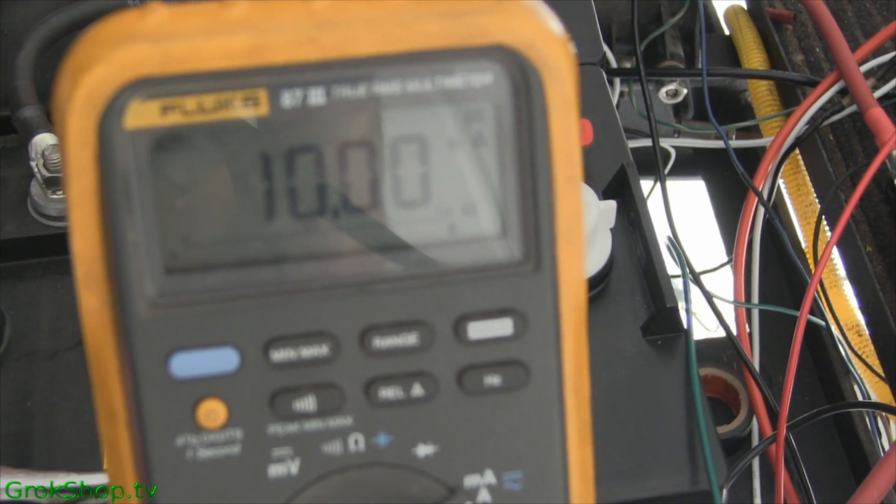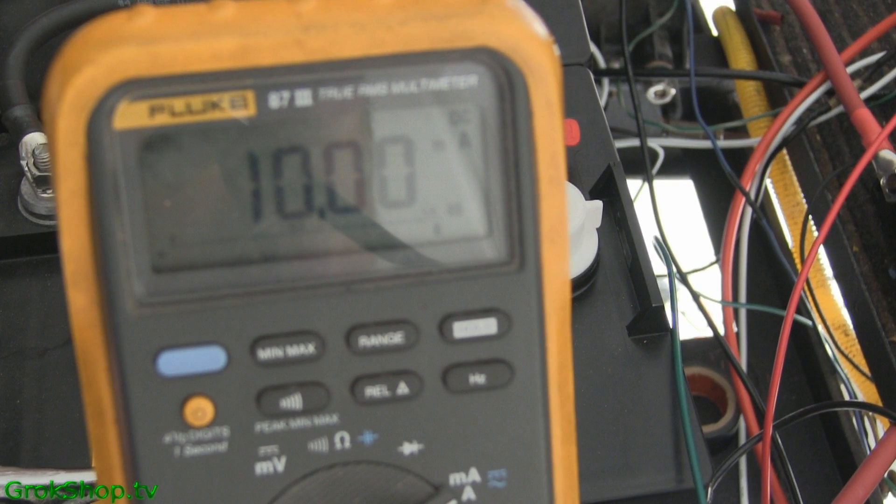So one thing we'll need to know is the internal resistance of the state of charge meter. To figure that out, we'll just measure the current when the state of charge meter is hooked up to the 48-volt pack. To do that, just break the circuit, put your multimeter in amp mode, and put it in the circuit on either the positive or negative lead. Like you see here, I've measured it out at 10 milliamps.